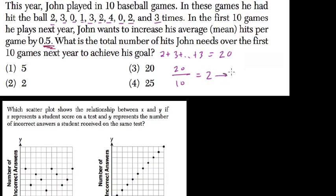But this year, he wants 2.5 hits per game. So think about this algebraically. He has to get an average of 2.5. So 20 hits plus what number, when you divide it by 10, will give you this average?